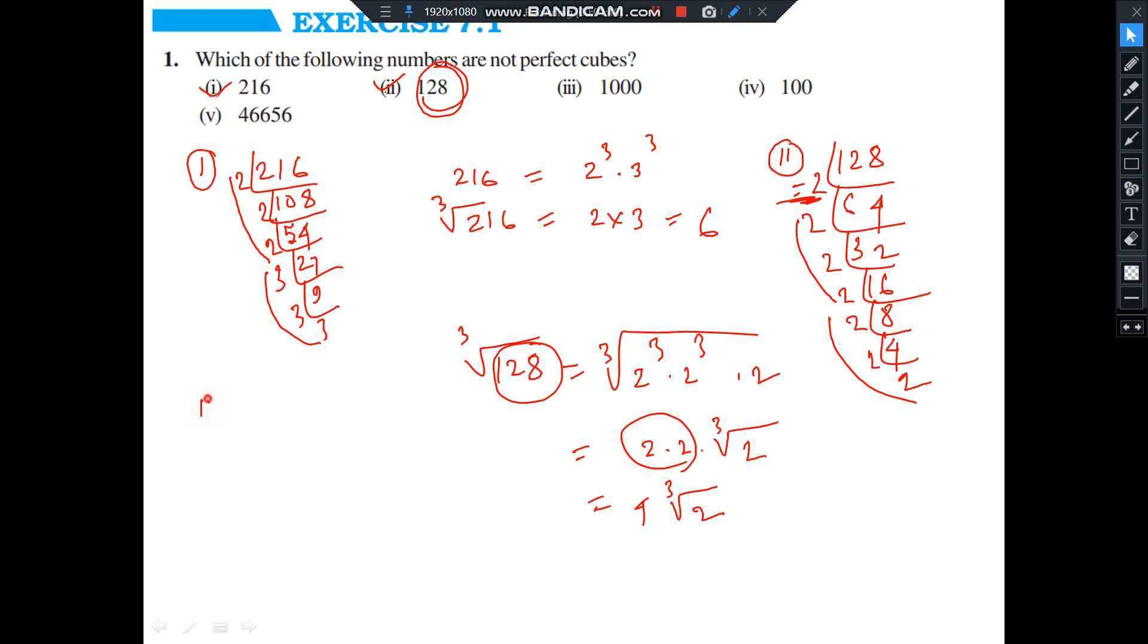And then number 3, 1000. So if you cube 10 it is 1000. Again by 10 it is 10. So 1000 is equal to 10 cube. That means cube root of 1000 is equal to 10. So this is a perfect cube number.